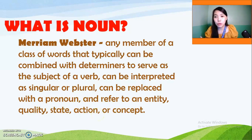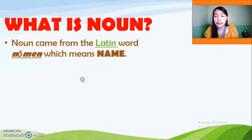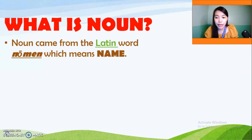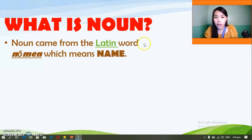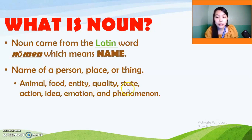That definition is a little broad for first-timers. So let me define it simply: a noun is a word that came from the Latin word 'nomen,' which means 'name.' When we are talking about noun, we are talking about name. What kind of name? Name of a person, place, or thing. We also need to take into consideration names of animal, food, entity, quality, state, action, idea, emotion, and phenomenon.